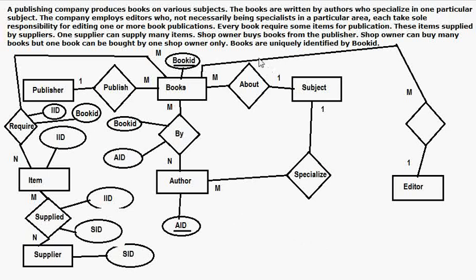Every book requires some items for publication and they will be supplied by some supplier, and a supplier can supply many items. Now, a shop owner buys books from a publisher.